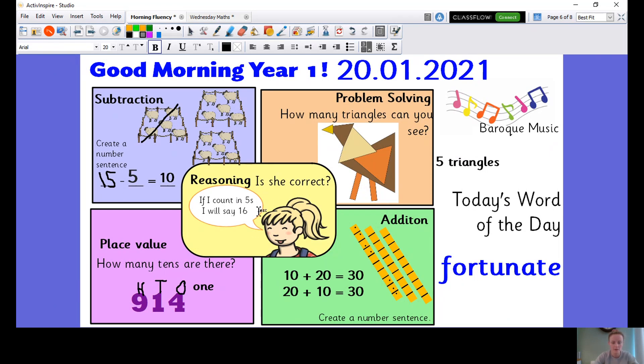So if I count in fives, I know that the number, the ones column, has to be a zero or a five. So is 16 a zero or a five in the ones column? No, so that is your reasoning.